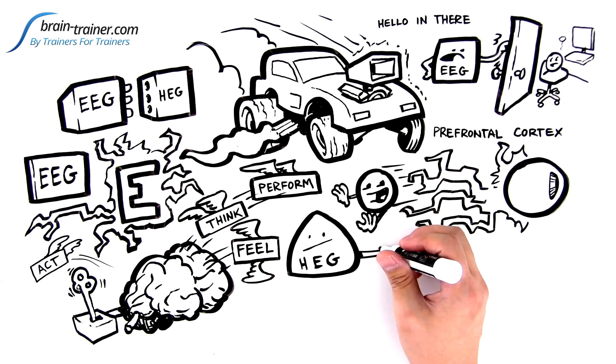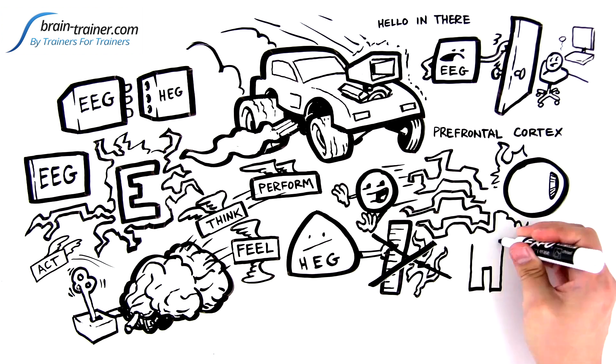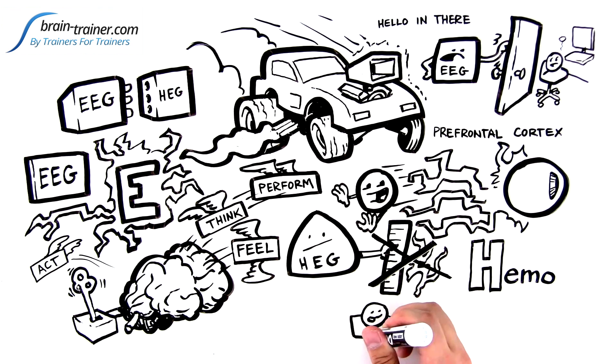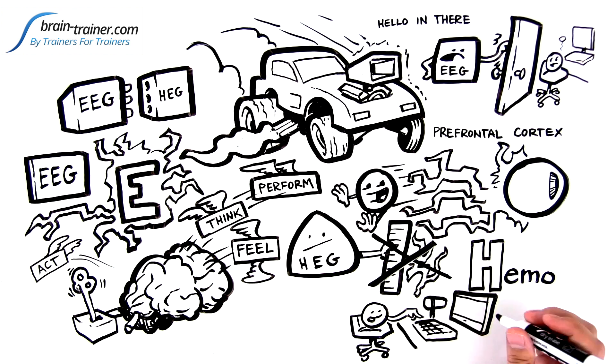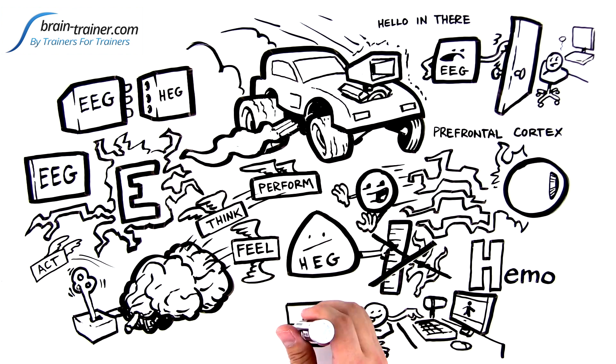But HEG doesn't measure electricity. The H stands for hemo, blood supply. Neurons in your PFC control much of the rest of your brain, so they need lots of oxygen and glucose delivered by blood.